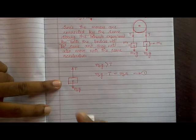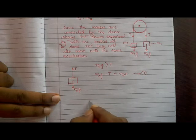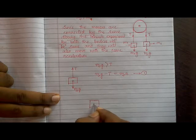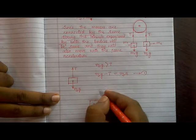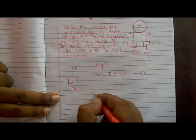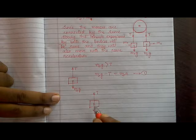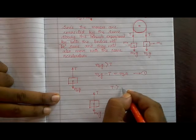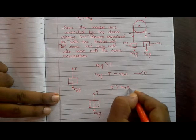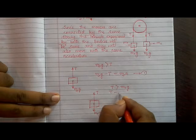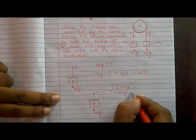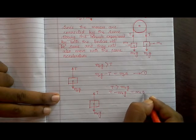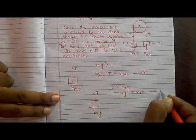Now for mass m1, since m1 is moving upward, tension T is greater than m1g. We can write: T minus m1g equals m1a. Let us call this Equation 2.